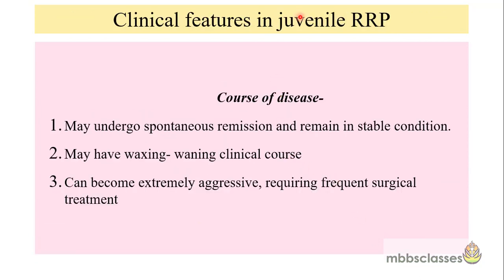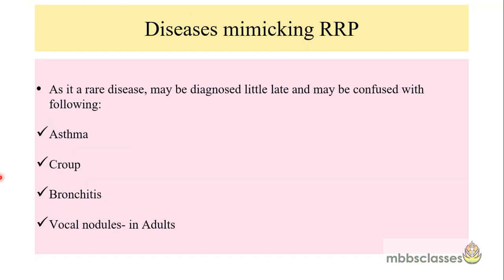The course of the disease in juvenile RRP is not the same in all children. In some it may undergo spontaneous remission and remain stable. In some patients it may have a waxing and waning type of clinical course — it flares up, comes down, and then shows symptoms again. In a third group it may become extremely aggressive, requiring frequent surgical treatment. As the disease produces laryngeal and airway symptoms, it may be confused with asthma, croup, bronchitis, and vocal nodules in adults. So whenever you are getting a patient with hoarseness and stridor, always keep in mind the differential diagnoses.